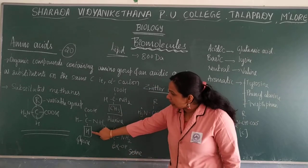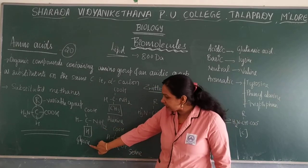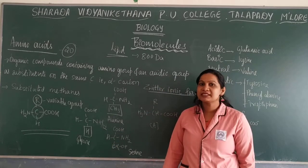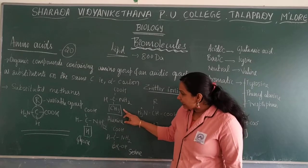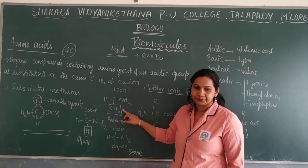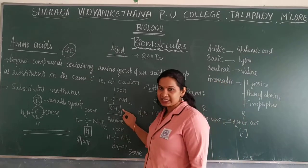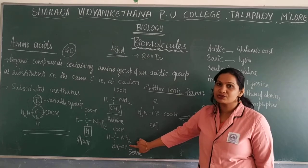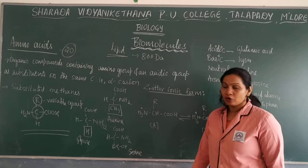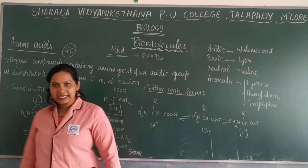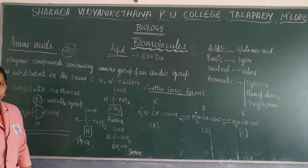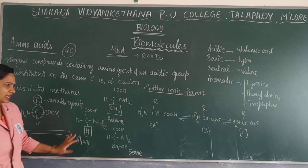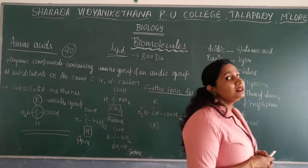There are about 20 amino acids, and the R group varies for different types. For example, in glycine the R group is H — it is the simplest amino acid. In alanine, the R group is CH₃ (methyl group). In serine, the R group is CH₂OH.